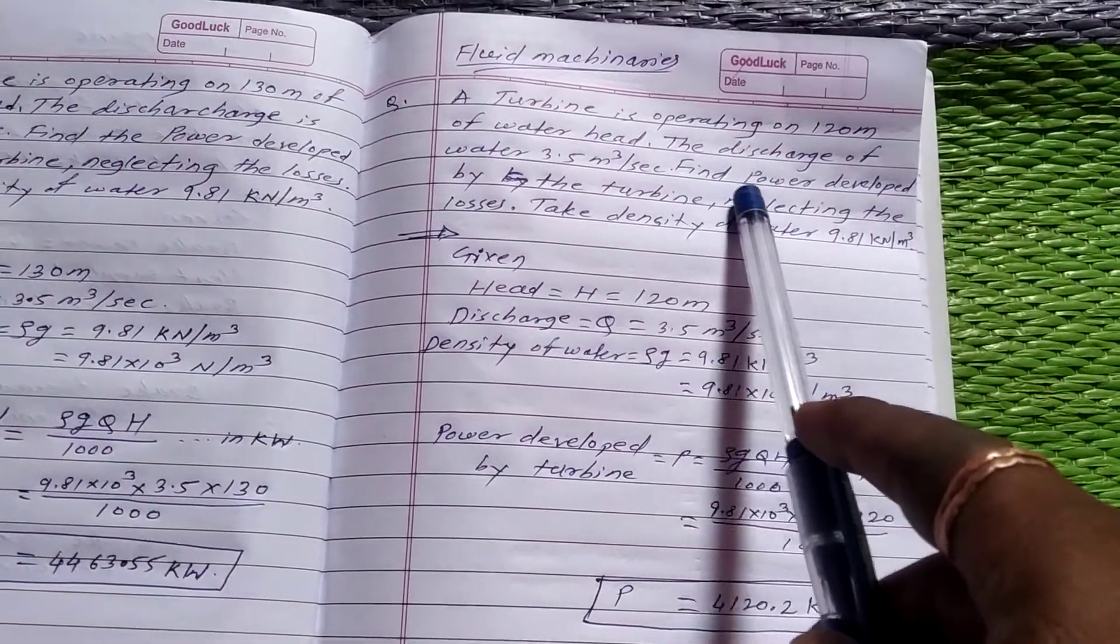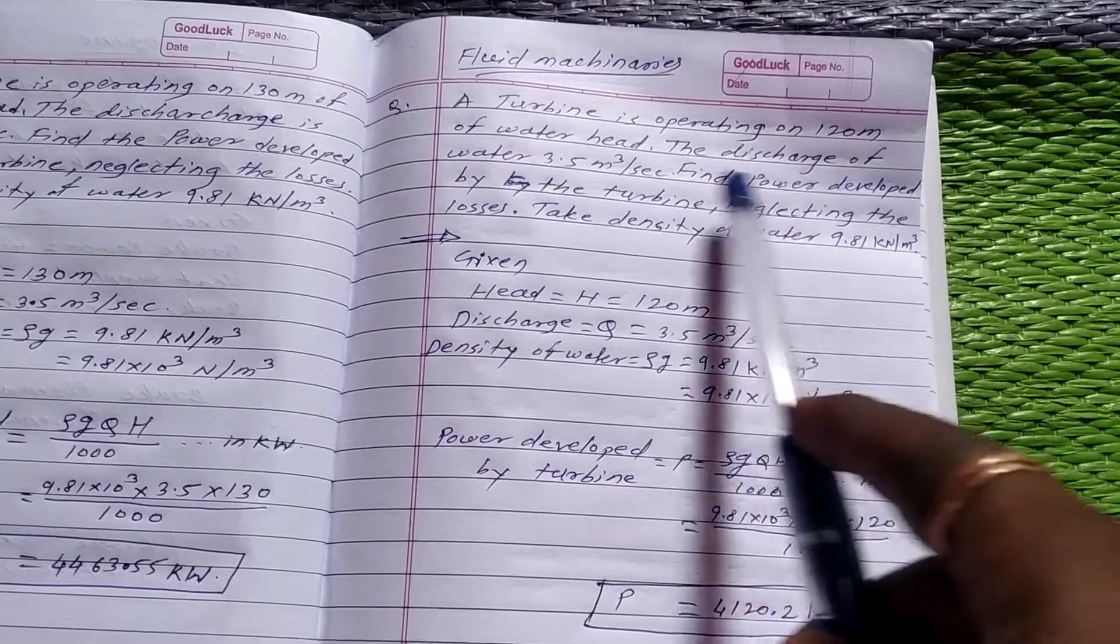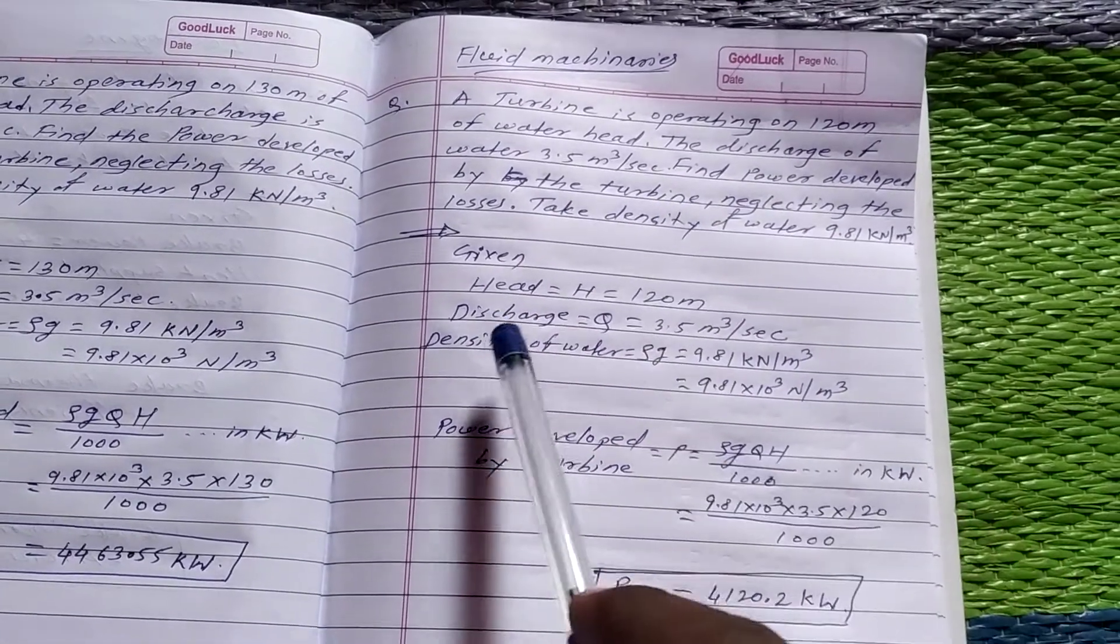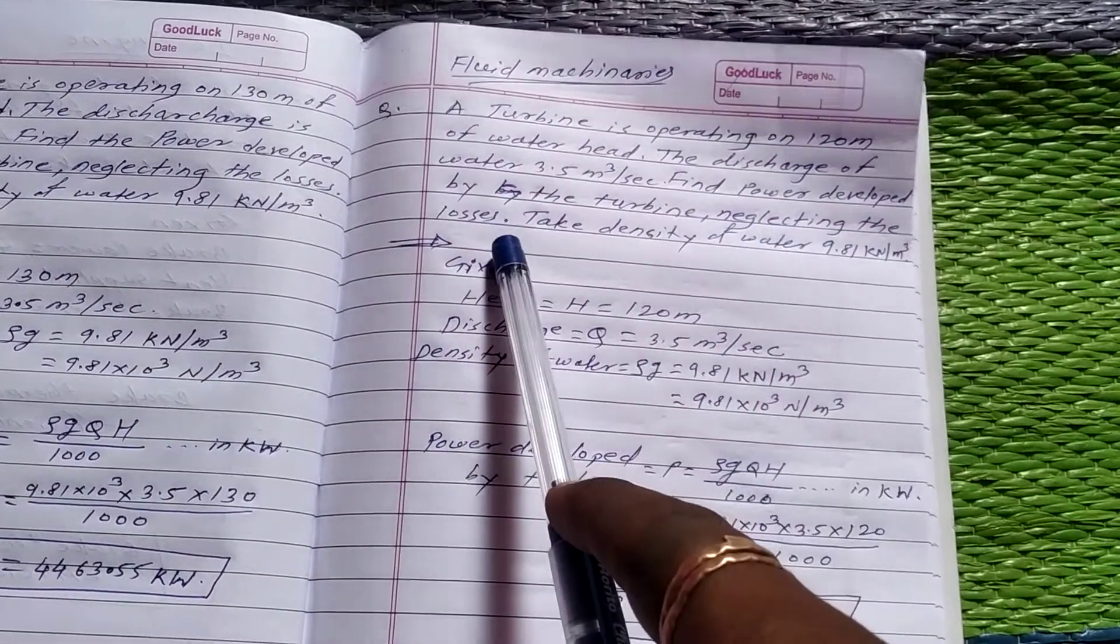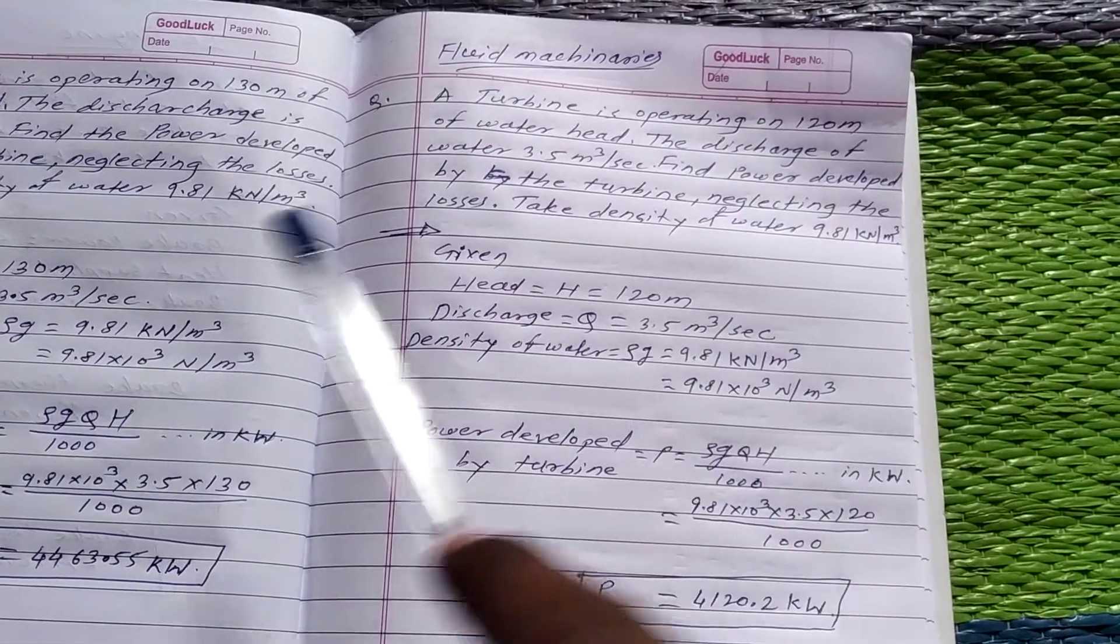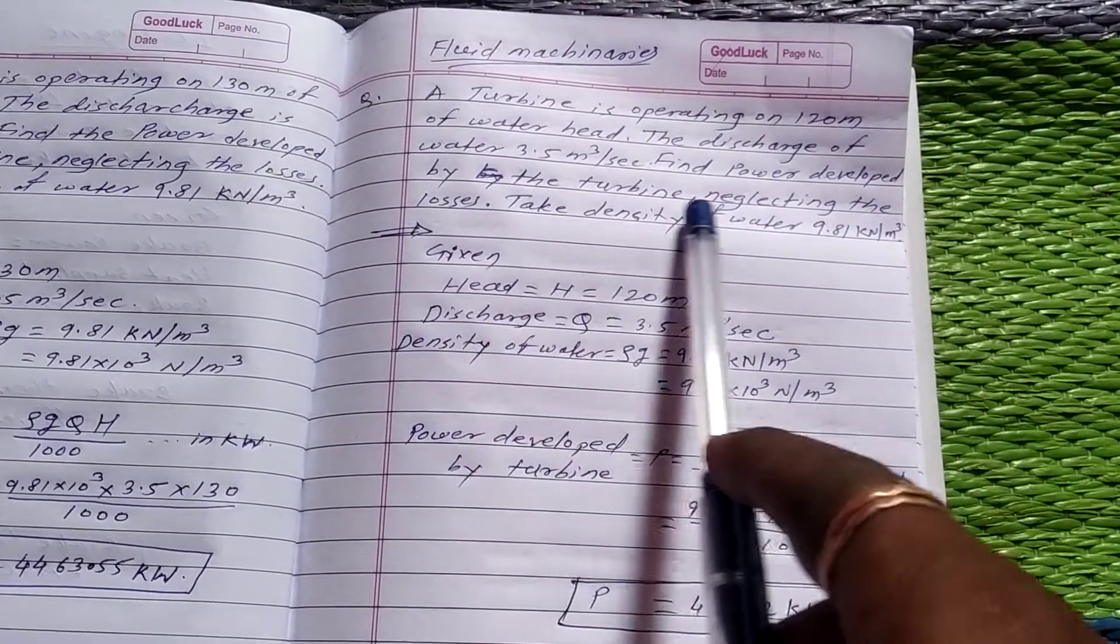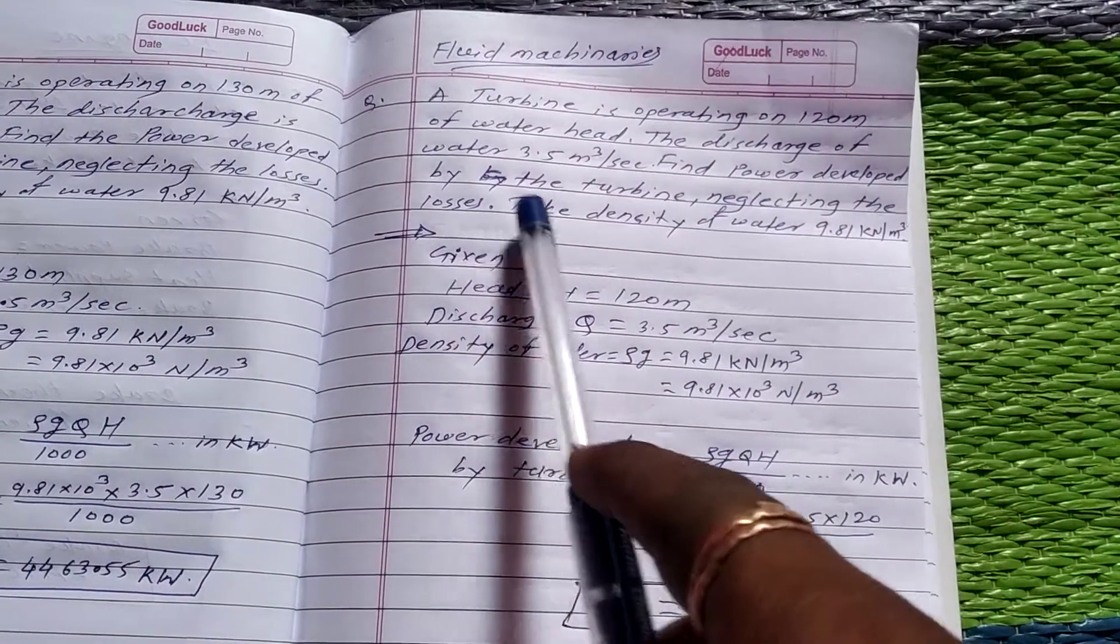Next in this problem, find power developed by the turbine. We want to find the power, neglecting the losses. So in this problem, no losses because they given neglecting the losses.